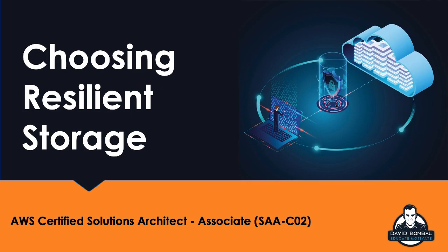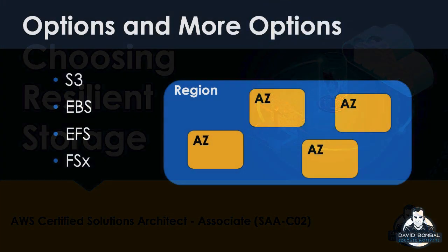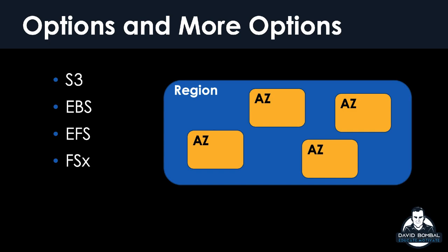One of the reasons you may be turning to AWS for storage purposes is you want resiliency — maybe resiliency that you would not be able to achieve with your budget and the technologies available to you on-prem. The great news is, thanks in great part to the region and availability zone configuration of Amazon's physical resources across the globe, you can get resilient storage with ease in AWS.